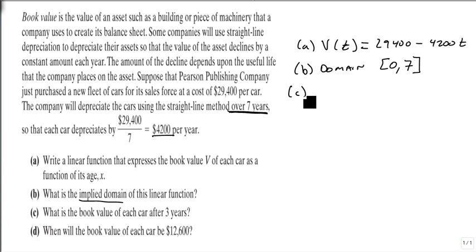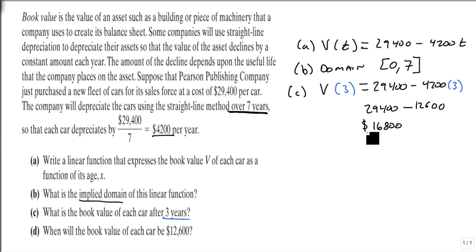Now we need to evaluate what is V(3), because that's three years. So this is $29,400 minus $4,200 times 3, which is $29,400 minus $12,600, which equals $16,800. That's how much the vehicle is worth to us after three years.